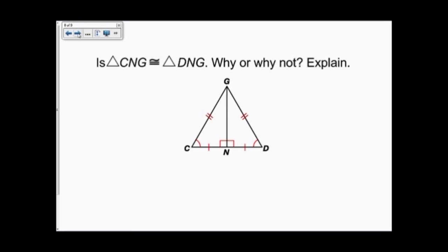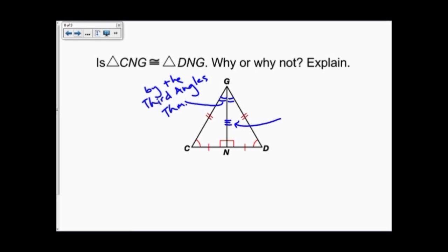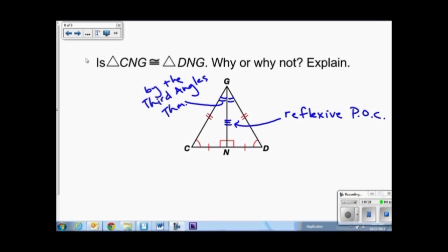Last question: is triangle CGN congruent to triangle DGN? I already have a lot of information, but I'm missing a side and an angle. The angle CGN will be congruent to angle DGN by the Third Angles Theorem, since the other two pairs of angles are already congruent. Also, segment GN is congruent to itself by the Reflexive Property. Since all corresponding parts are congruent — all corresponding sides and all corresponding angles — yes, they are congruent.